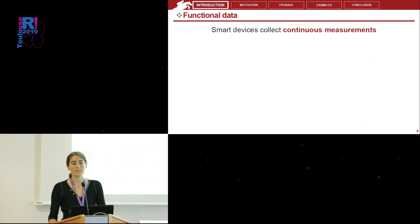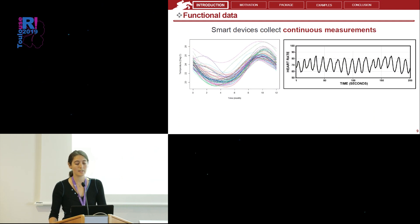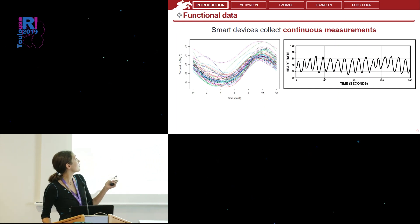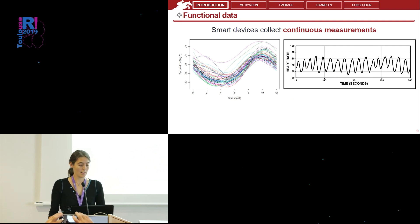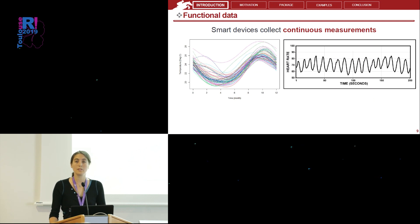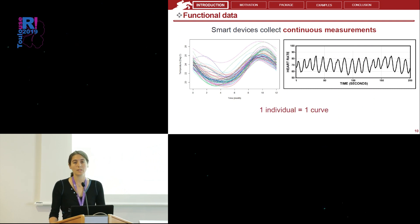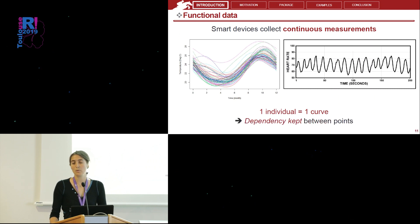Smart devices collect continuous measurements, which can be seen as functional data. Functional data are data that can be linked by a curve — for example, one curve corresponds to the temperature of one city along the year, or the heart rate of one sportsman. The advantage of functional data is that one individual is considered as a curve rather than a vector of points as in multivariate statistics, and that functional data analysis preserves the dependency between points.